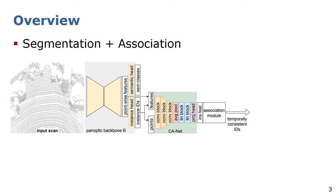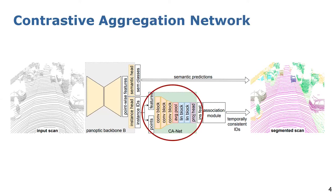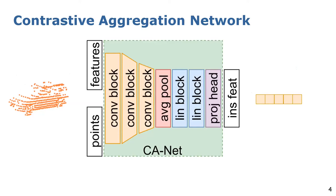Using the semantic predictions from the backbone, we get our segmented scan with IDs that are consistent over time. Let's dive into the Contrastive Aggregation Network, which is the core module. It takes the points depicting one instance and their features, and produces a single instance feature. We first apply sparse convolutional blocks to learn not only from features but also from the shape of the object, then a pooling layer to get a single feature vector, and finally linear blocks and a projection head to get the final instance-wise feature.